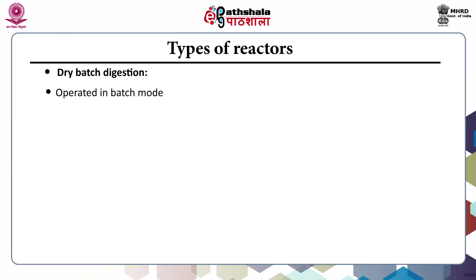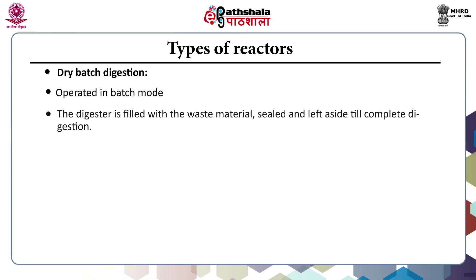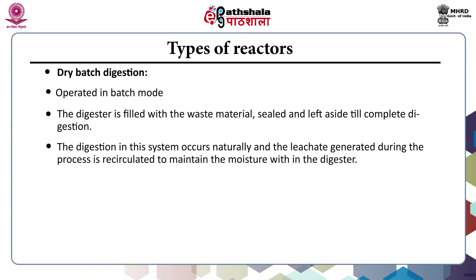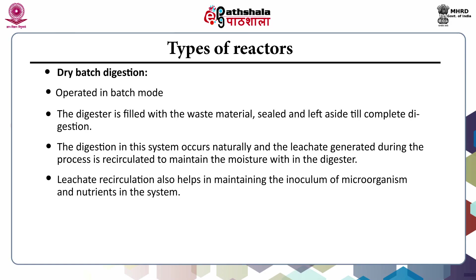The second type is dry batch digestion, where the digester is operated in batch mode. The digester is filled with waste, sealed, and left until complete digestion occurs naturally. The leachate generated is circulated back into the digester to maintain moisture content. This circulation also maintains the inoculum and nutrient levels within the digester. The digester is opened at the end of the digestion process.